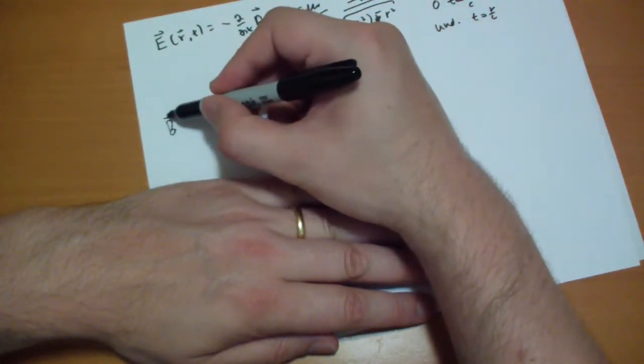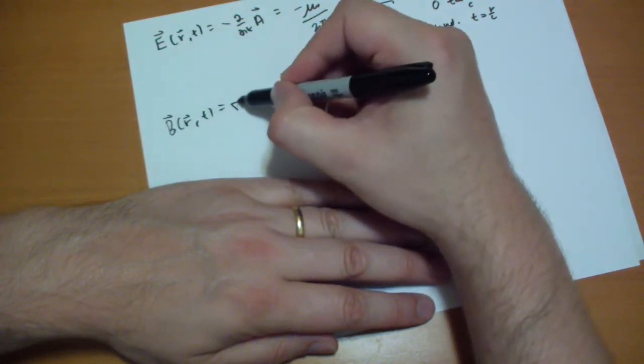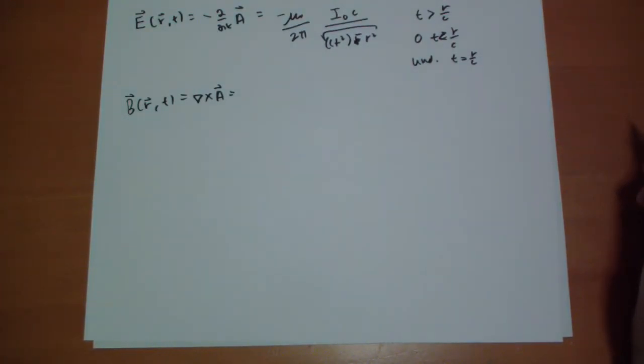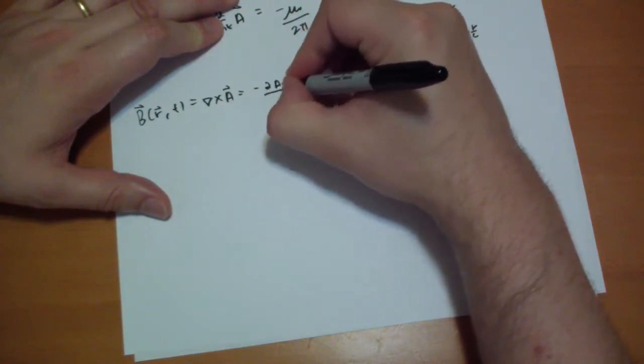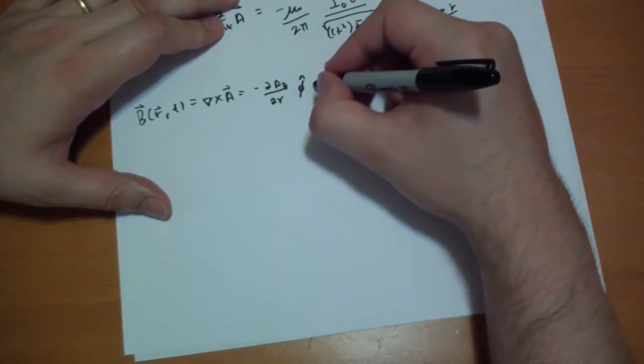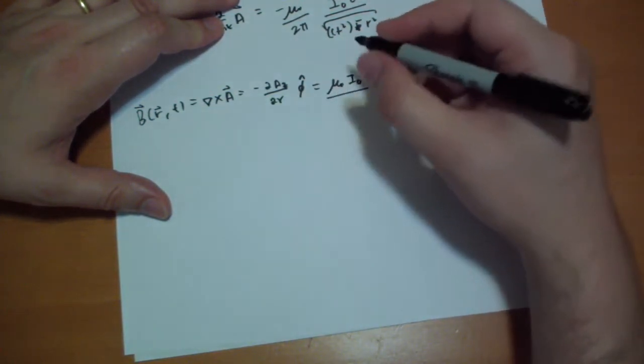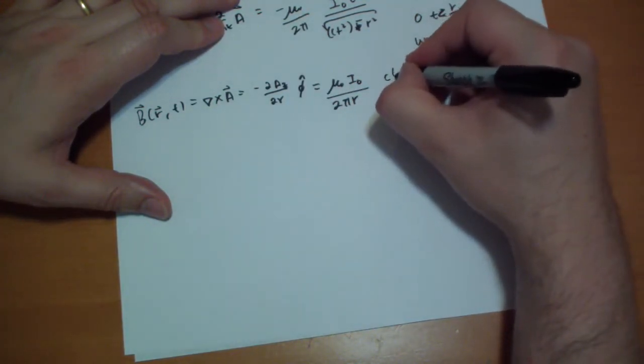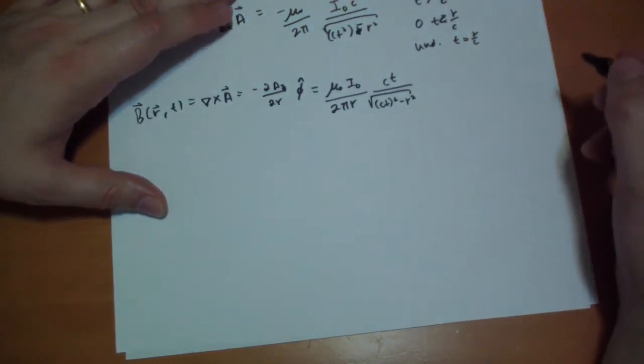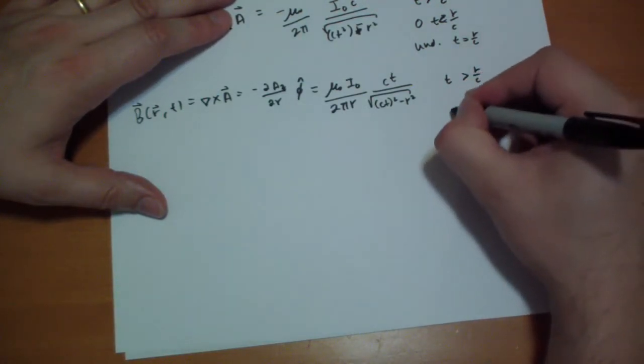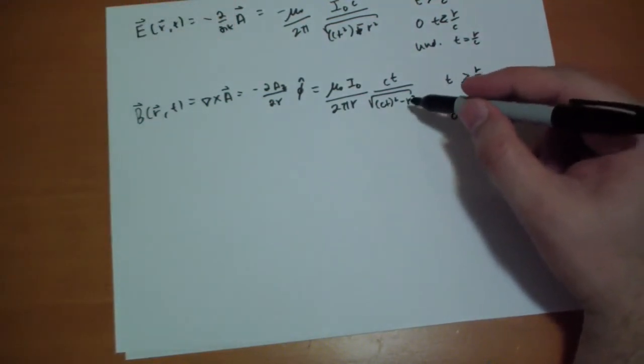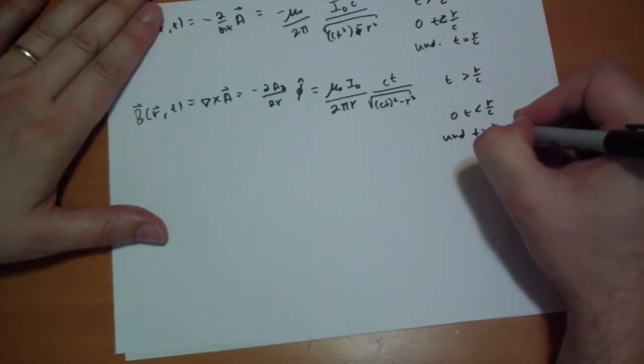So our b field is just the curl of the a. And you work the curl out with that a equation I gave you earlier. And the only term that's important is the dAz by dr in the phi hat direction. And so that just ends up being mu naught i naught over 2 pi r times ct over the square root of ct squared minus r squared. And again, that's when t is greater than r over c. It would be zero when t is less than r over c. And once again, it's going to be undefined at t is equal to r over c.